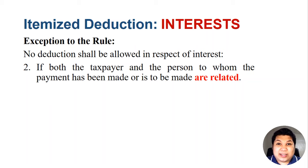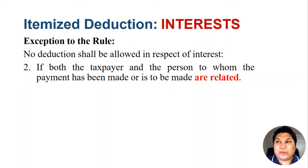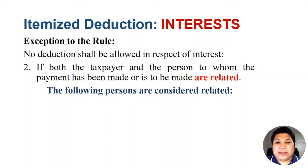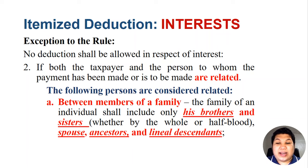So when are the lender and borrower considered related? The following persons are considered related. Letter A — between members of a family. The family of an individual includes his brothers and sisters, whether whole or half-blood, spouse, ancestors, and lineal descendants. When we say brothers and sisters, whether whole or half-blood, this could be from both parents or from one parent alone. Since the law does not provide for stepbrothers or stepsisters, they are not considered related.